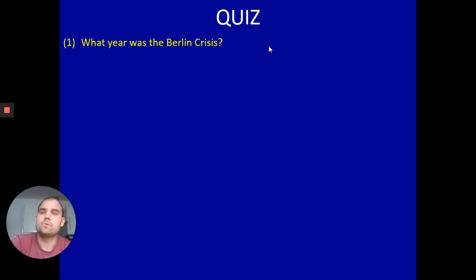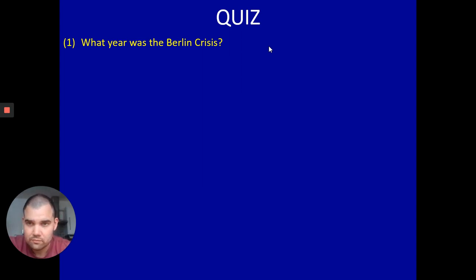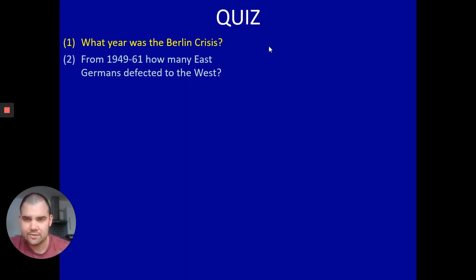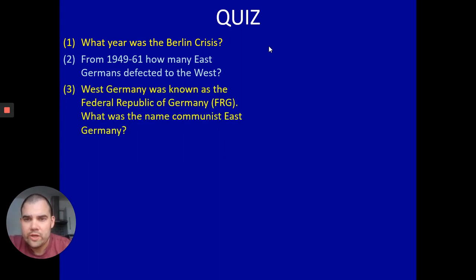Question one: what year was the Berlin Crisis when the Berlin Wall was built? Number two: from 1949 to 1961, how many million East Germans defected to the West? Number three: West Germany was known as the Federal Republic of Germany, or the FRG. What was the name of communist East Germany? You can just give me the initials, or if you can, the full name.